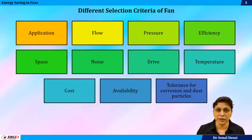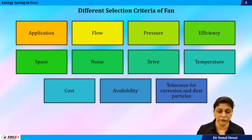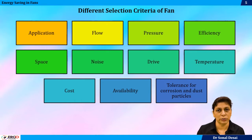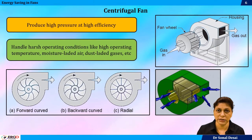Fan selection criteria involves many parameters like flow rate requirement, pressure requirement, efficiency of the fan, delivered space, noise, driving source, temperature handling of air, cost, availability, and corrosion and tolerance issues. Based on these criteria, which fan is convenient for a particular process will be discussed in this video series.